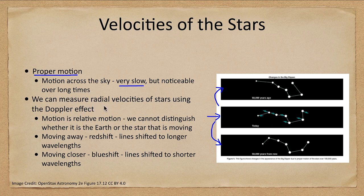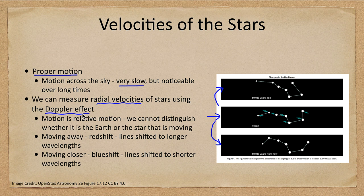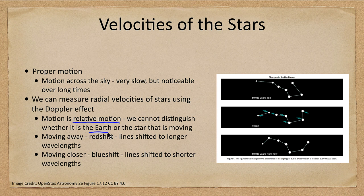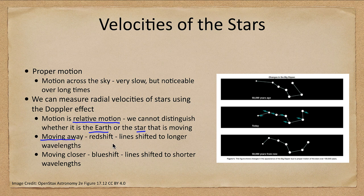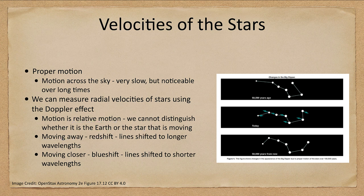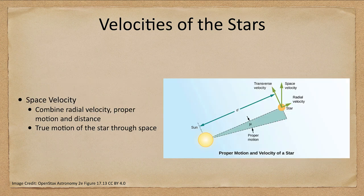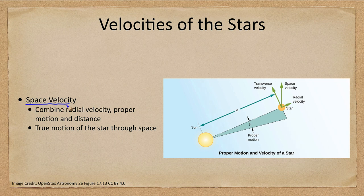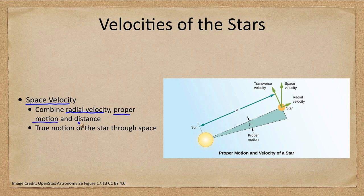What we can measure is the radial velocities, and we can use that using the Doppler effect. Remember that the motion is relative. We cannot distinguish if it is Earth or the star that is moving, and most likely it's going to be both. If it's moving away, it's a redshift. The lines are shifted toward longer wavelengths. Moving closer means a blueshift. Lines are shifted to shorter wavelengths. And we can use this and put these together to get the true velocity of a star. That's what we would call the space velocity. We can combine the radial velocity, the proper motion, and distance.